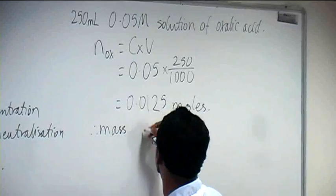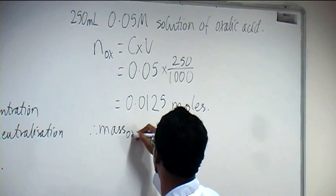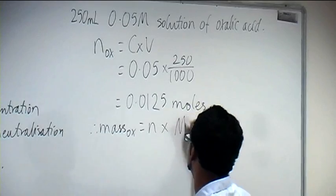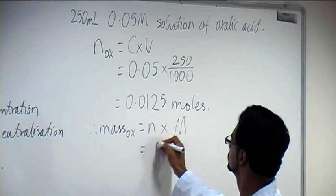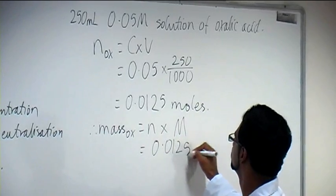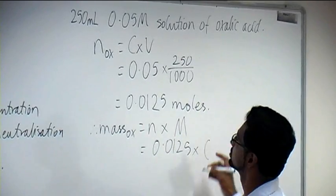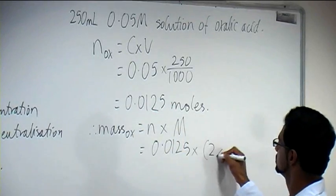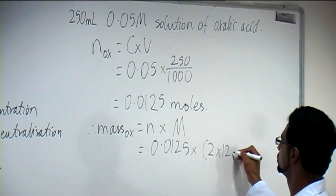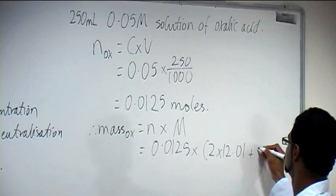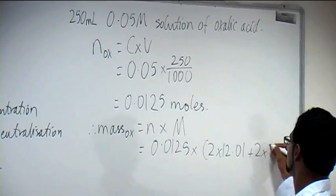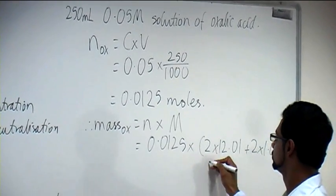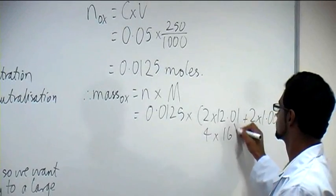Mass equals moles times molar mass. So 0.0125 moles times the molar mass of oxalic acid. The molar mass is 2 carbons — 2 times 12.01 — plus 2 hydrogens — 2 times 1.008 — plus 4 oxygens — 4 times 16.